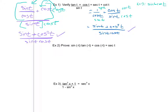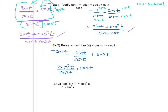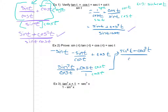Ignoring the right for now, sine of negative t is the same thing as negative sine t. Negative tangent t — the negative can come out — is the same thing as negative sine t over cosine t. The cosine of negative t is just cosine t since cosine is an even function. So negative sine t times negative gives me sine squared t over cosine of t, plus cosine of t. To get a common denominator, I multiply the cosine of t term top and bottom by cosine of t, giving me sine squared t plus cosine squared t, all over cosine of t.